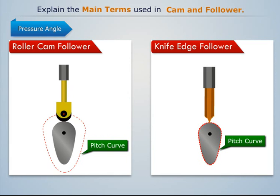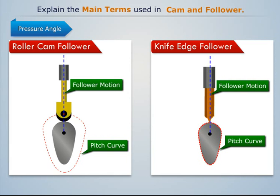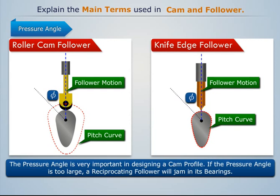Pressure angle: it is the angle between the direction of the follower motion and the perpendicular drawn to the pitch curve. It is denoted by Phi. The pressure angle is very important in designing a cam profile — if the pressure angle is too large, a reciprocating follower will jam in its bearings.